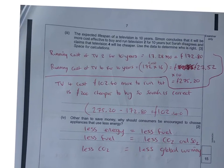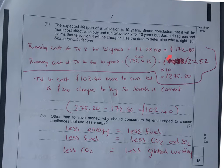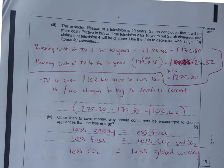This is an extremely long question on the first one. Expected lifespan of a television is 10 years. Simon concludes that it'll be more cost effective to get television 2 because it'll work out cheaper. I can use that £17.28 and times that by 10 years, that's going to give me £172.80.